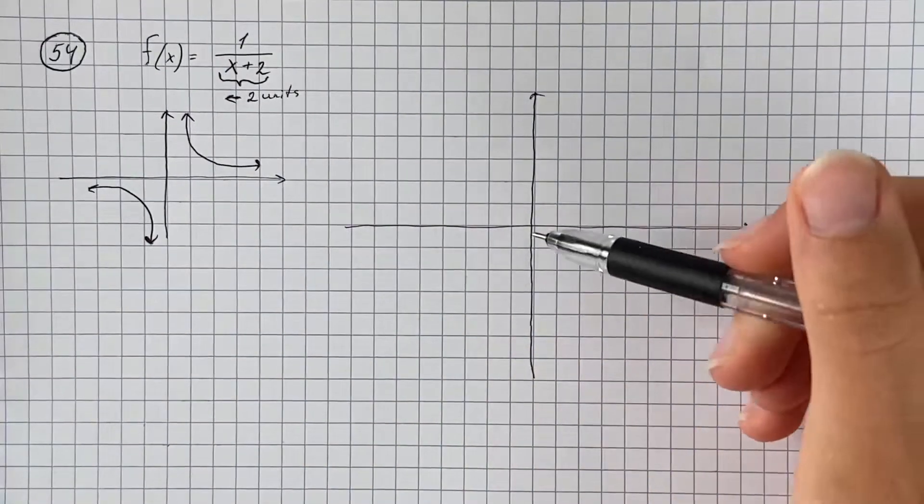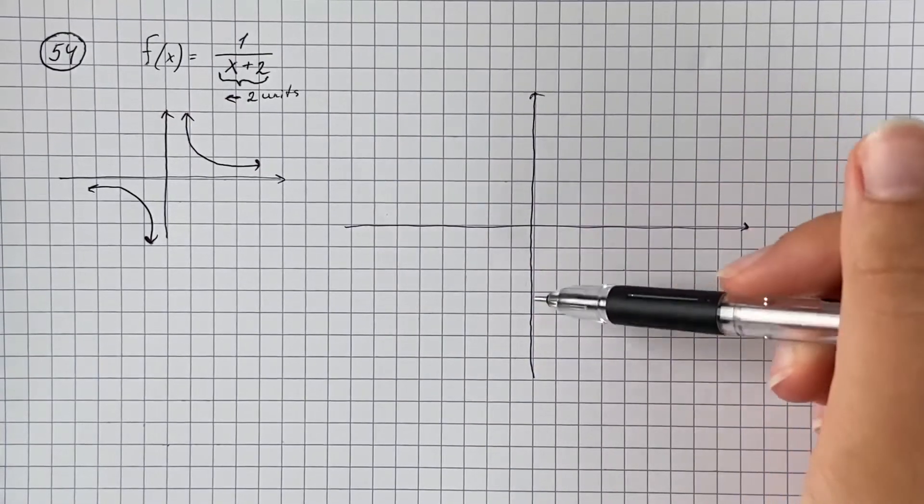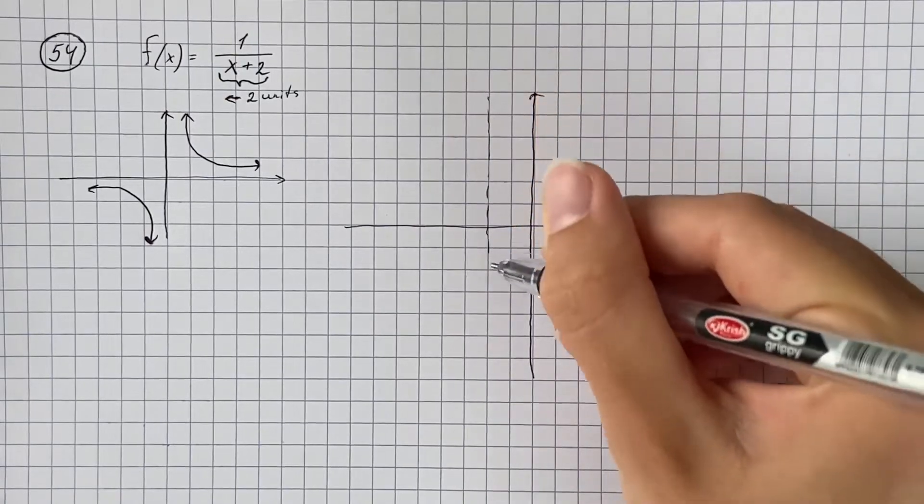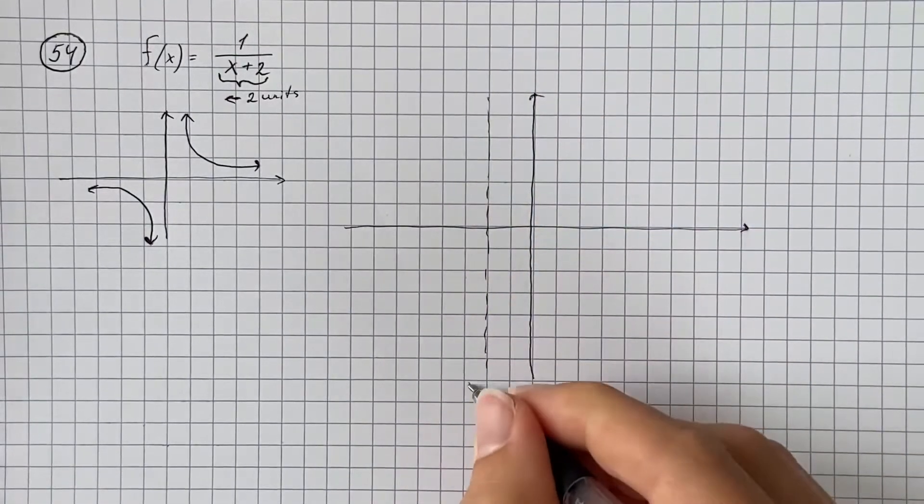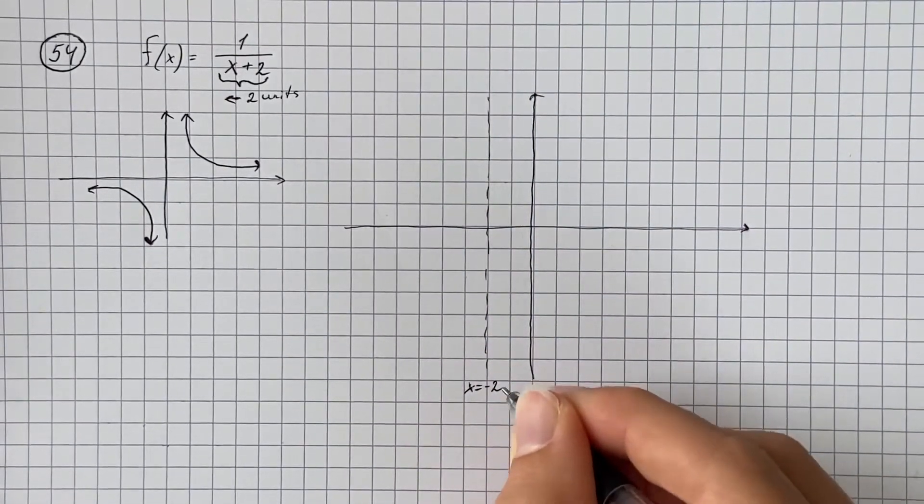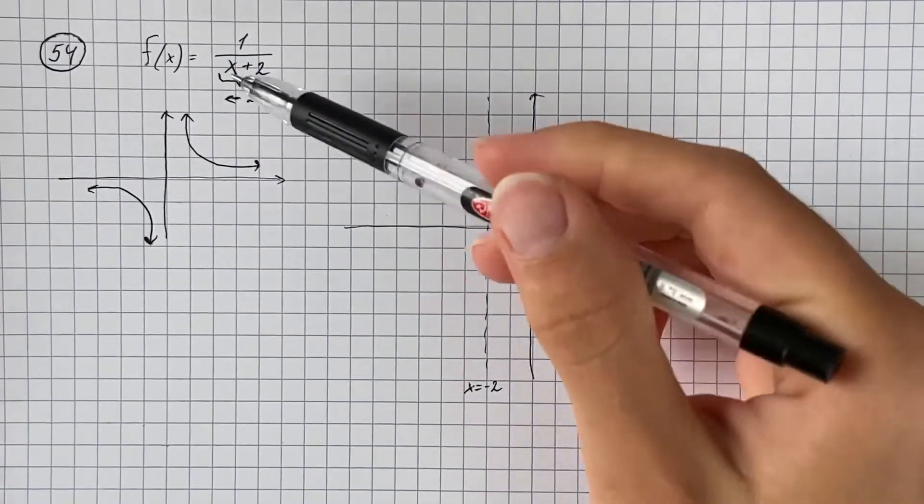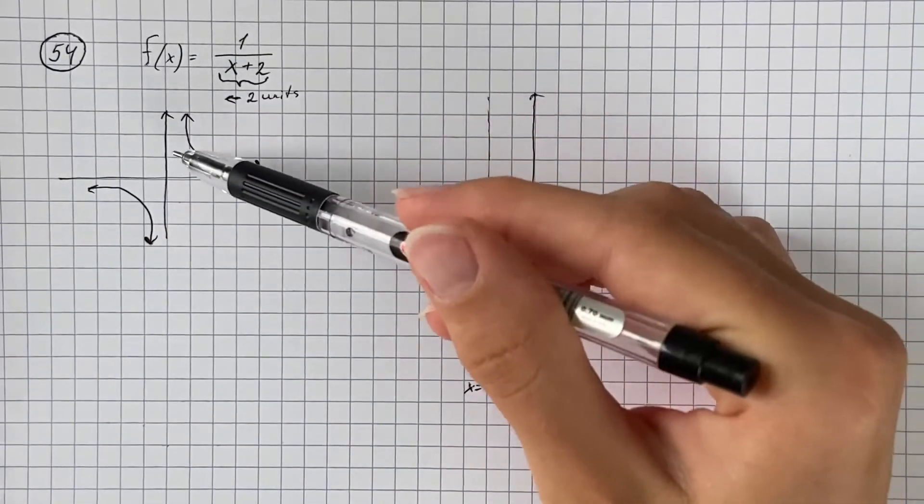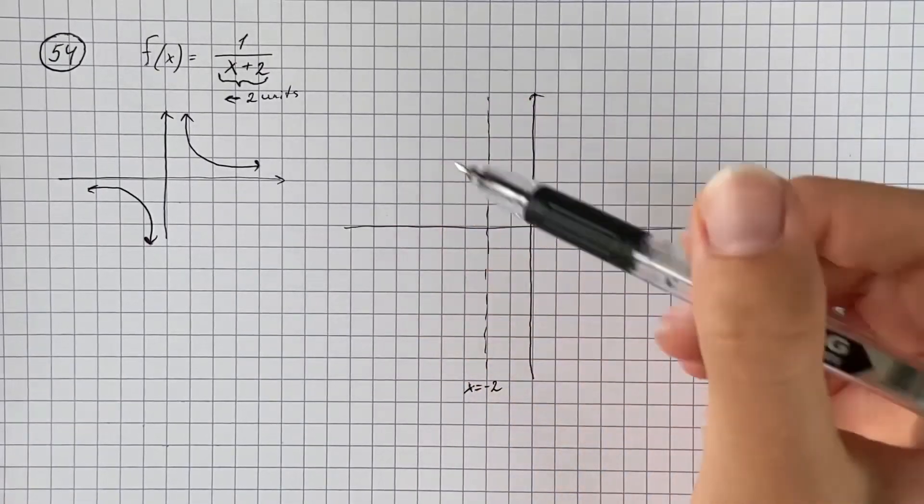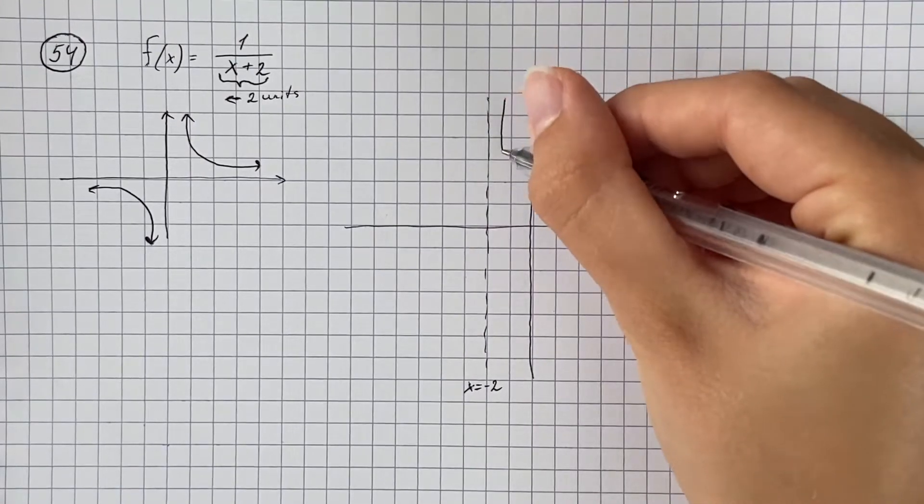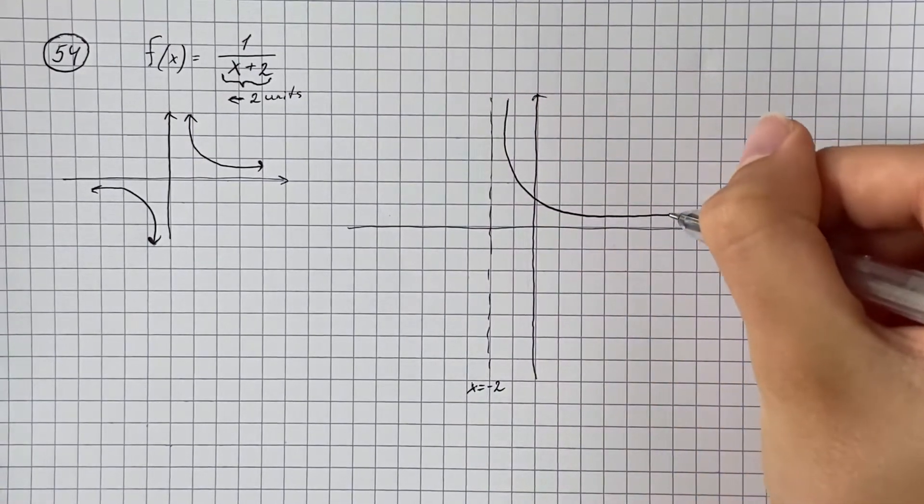So instead of having the vertical asymptote sitting at the y-axis, it will be sitting at x equals negative 2. And it makes sense that if we plug in x equals negative 2, it's going to be undefined, just as 1 over x is undefined at x equals 0. So then we're going to have the same basic shape as 1 over x.